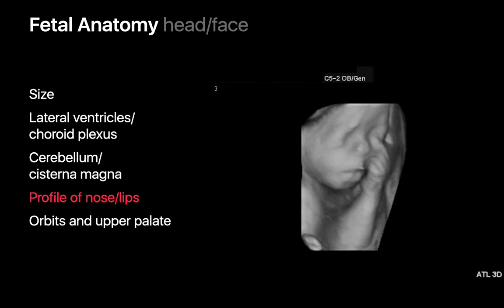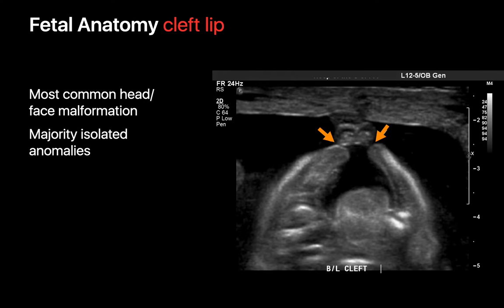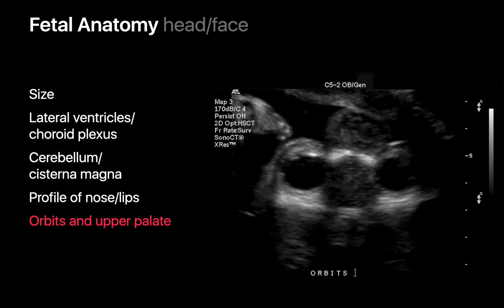Cleft lip is the most common facial malformation we'll usually see, and the majority of cases are isolated anomalies. We also evaluate the size of the orbits and the distance between each orbit, and we evaluate the upper palate looking for any evidence of cleft palate.